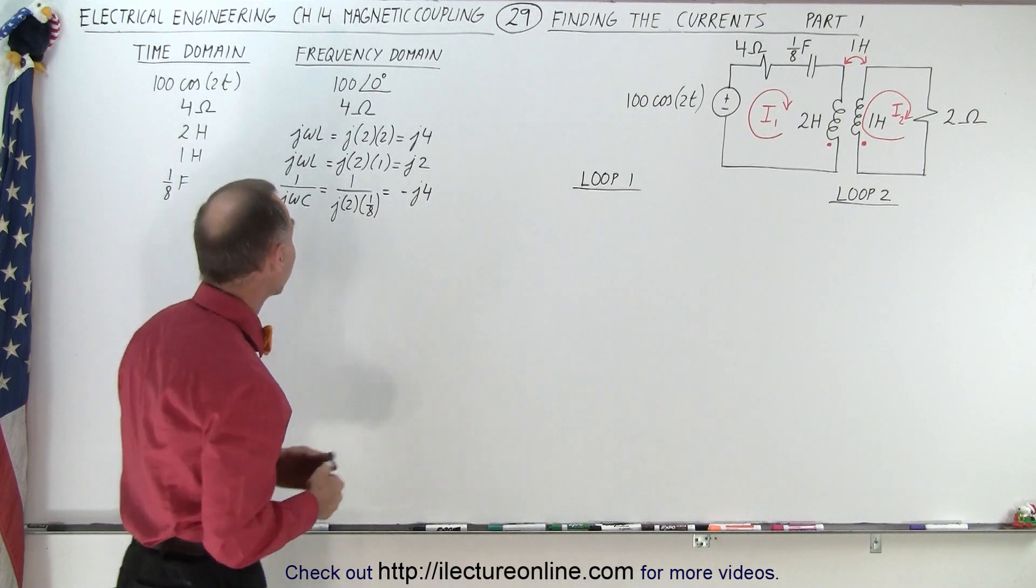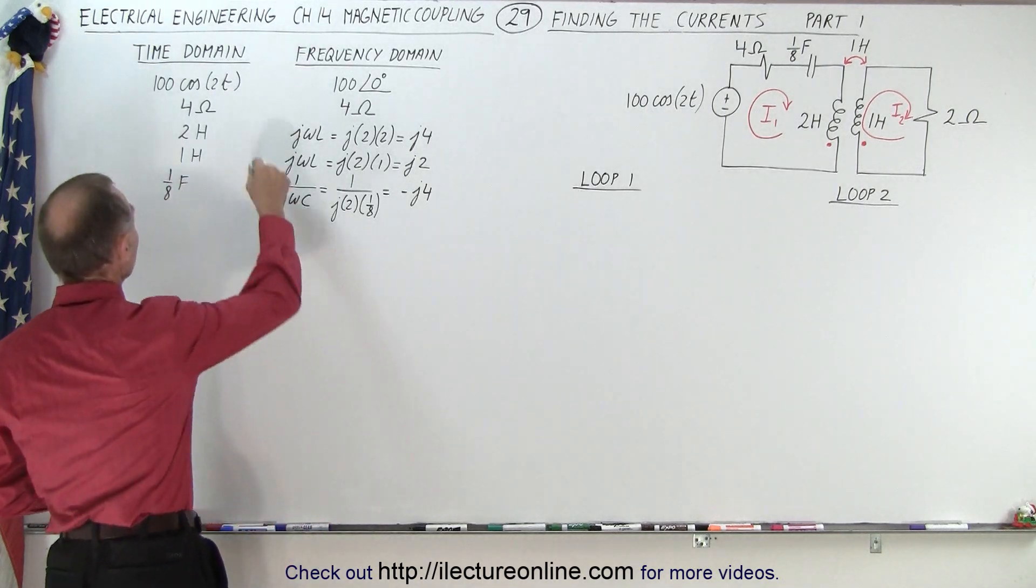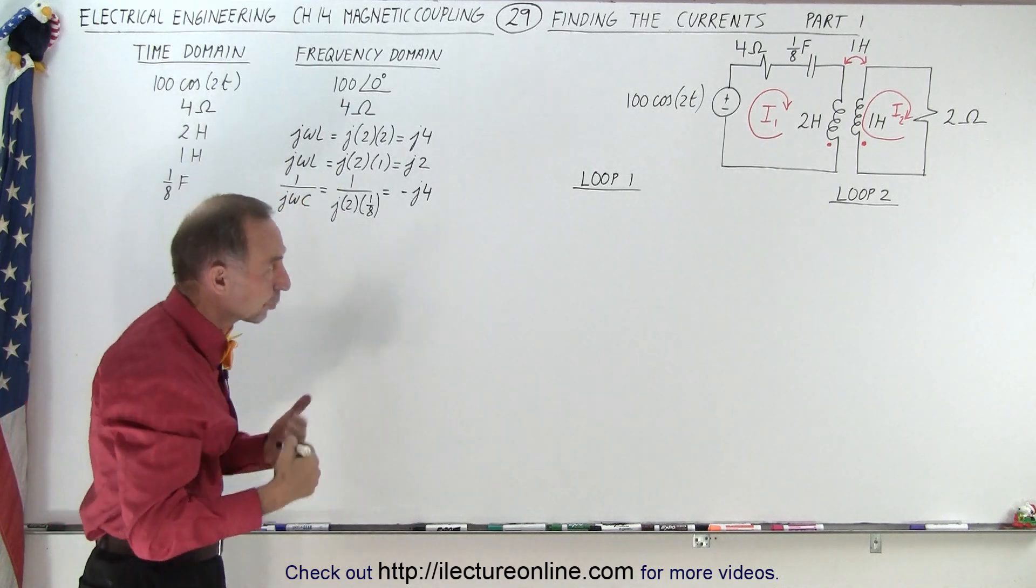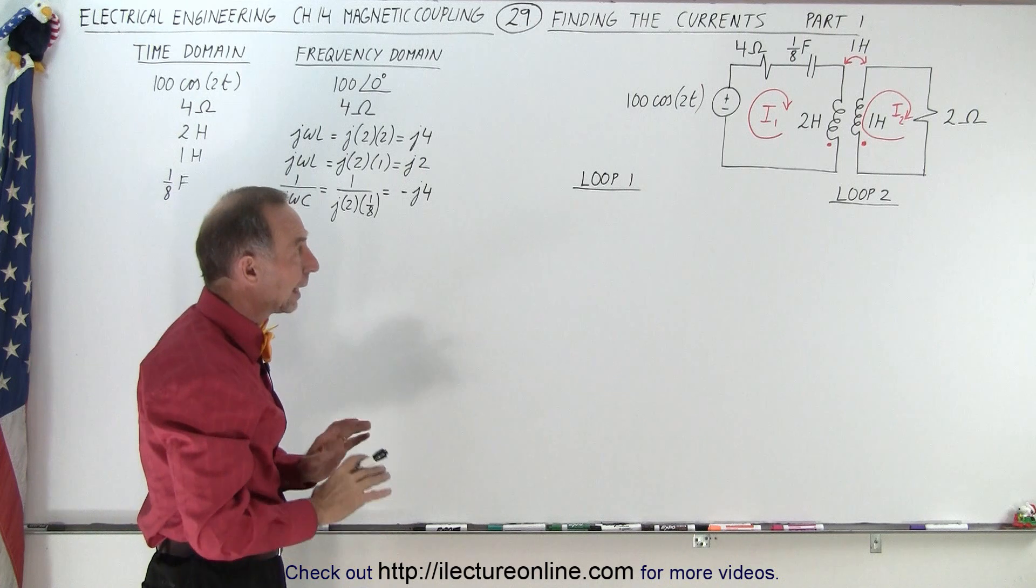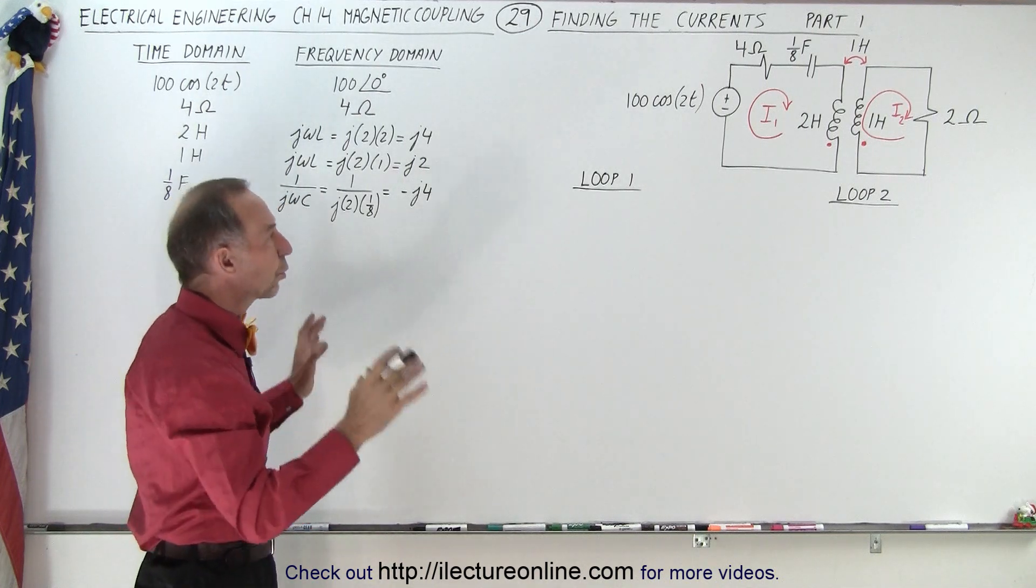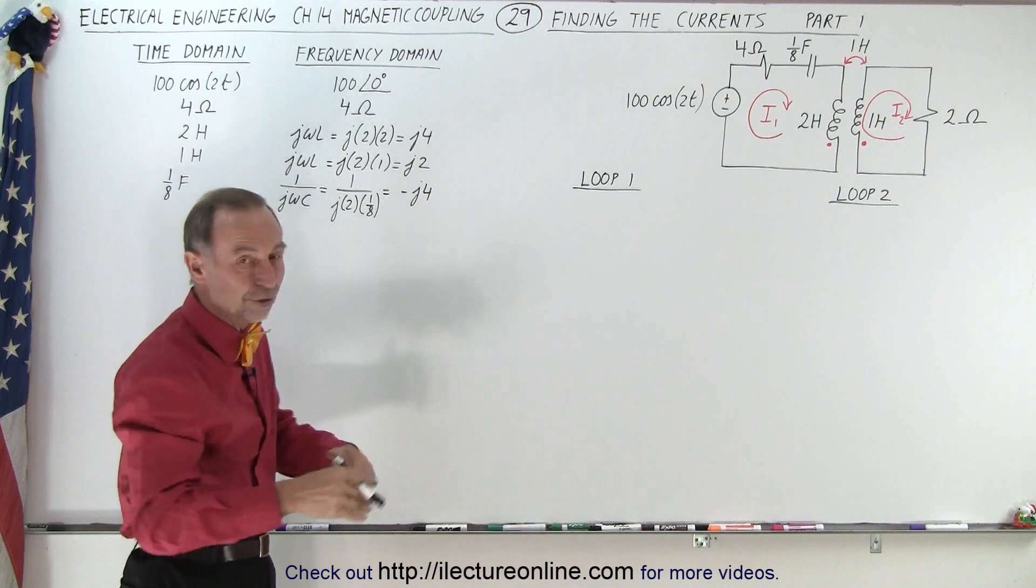Notice to make things speed up a little bit, I already put everything in terms of the time domain and the frequency domain so it's easier to go ahead and solve this problem. And what we're going to do in part one, we're just going to find the two equations for loop one and loop two using KVL.